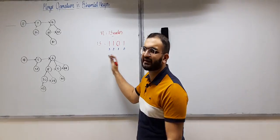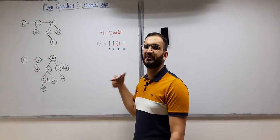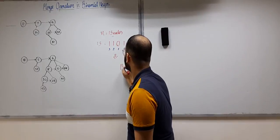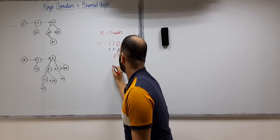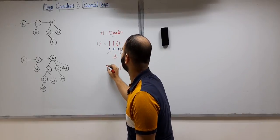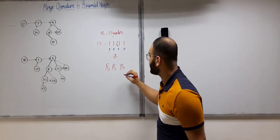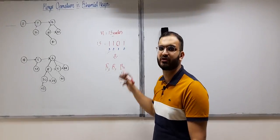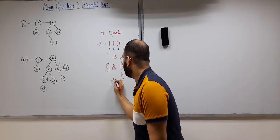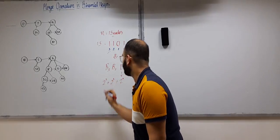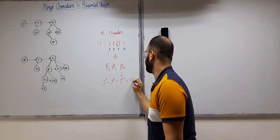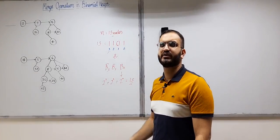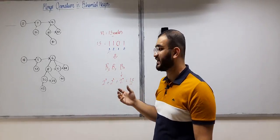All bits that are 1 indicate which binomial trees are included. This 13-node binomial heap will contain B0 (0th bit is 1), B2 (2nd bit is 1), and B3 (3rd bit is 1). Cross-checking: B0 has 2^0 nodes, B2 has 2^2 nodes, and B3 has 2^3 nodes, giving 1 + 4 + 8 = 13. So we can use this binary method to find which orders are included.